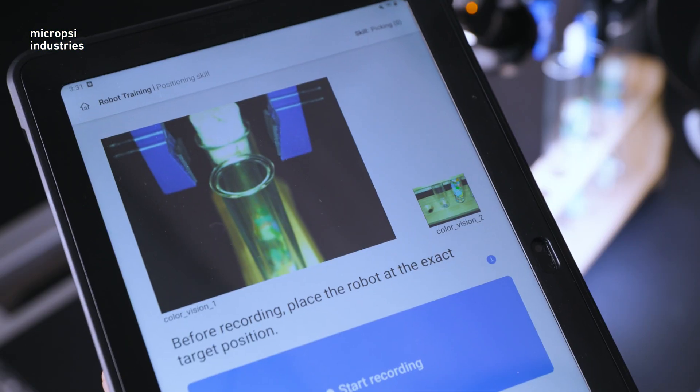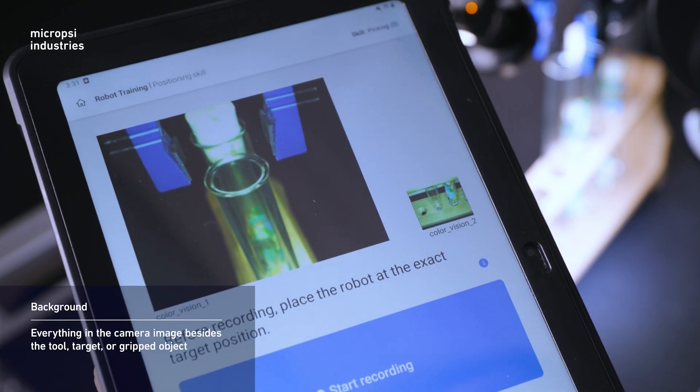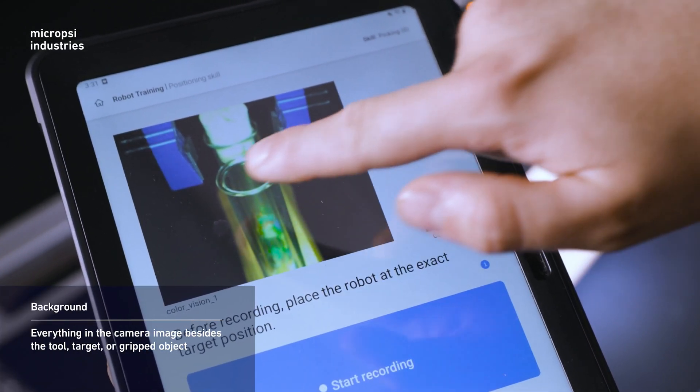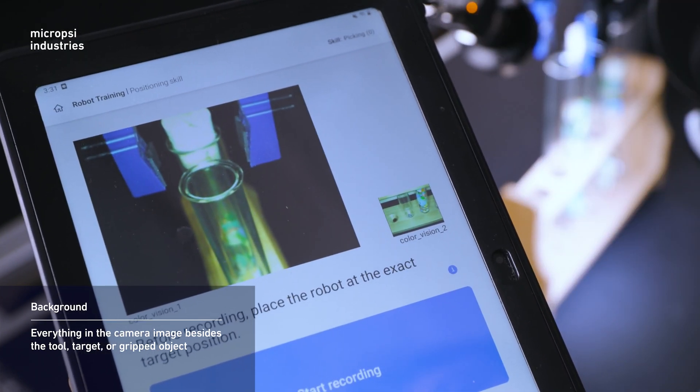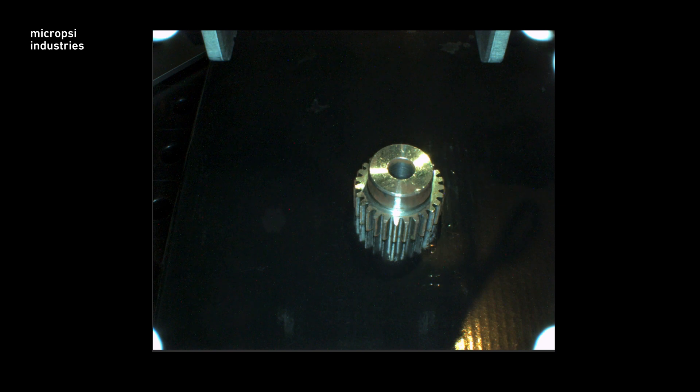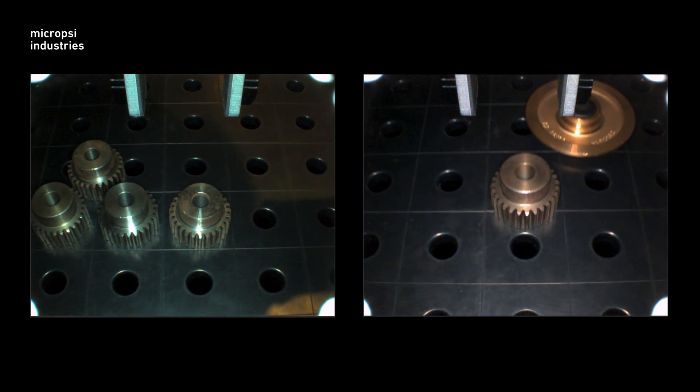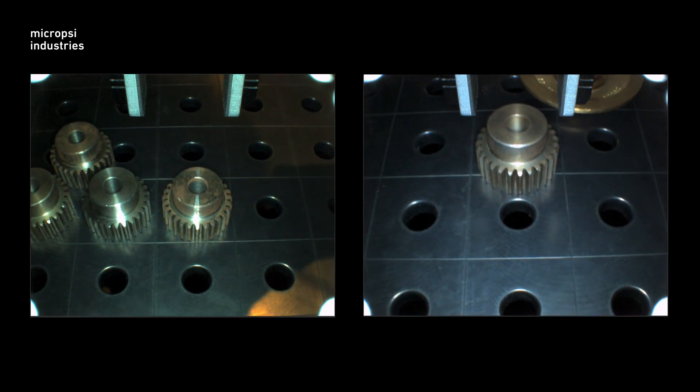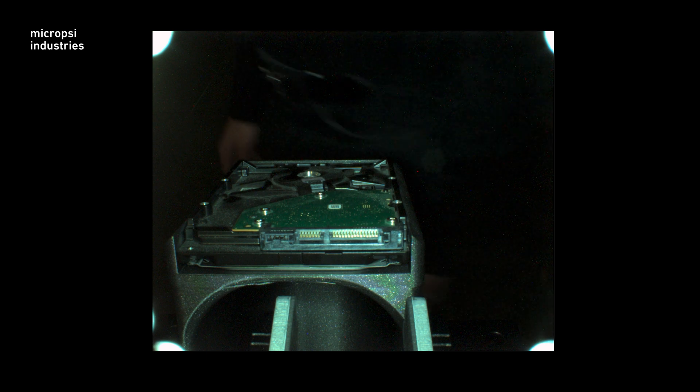The background can also be a source of variance. The background is everything in the camera image besides tool, target or gripped object. Sometimes the background can change. For example, the workspace could have a patterned or reflective surface, or other objects may be in the background. There might even be moving objects, including people.